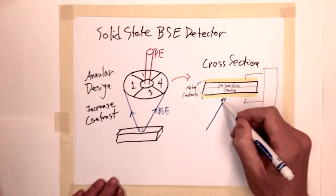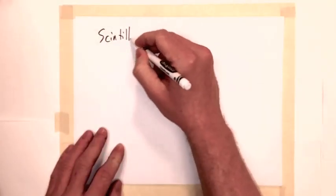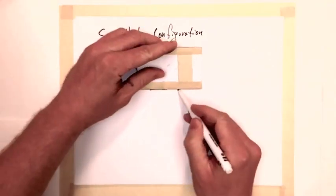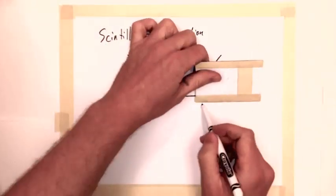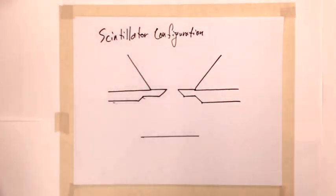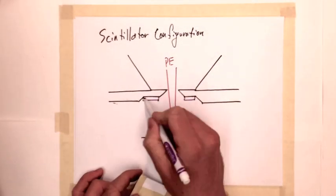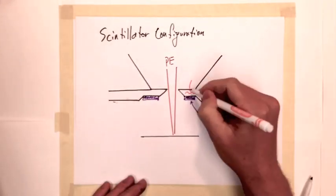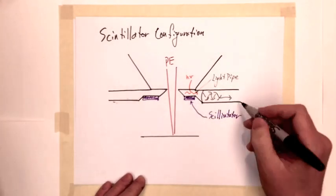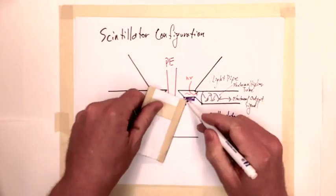Backscattered electron detection can also be realized using a scintillating device configuration, very similar to that of the Everhart Thornley detector. A scintillating film is placed under the aperture, and incident electrons cause the material to emit a photon proportional to the electron energy. This will be collected by a light pipe and fed into a photomultiplier tube. The PMT produces an electrical signal that can be amplified for image formation.